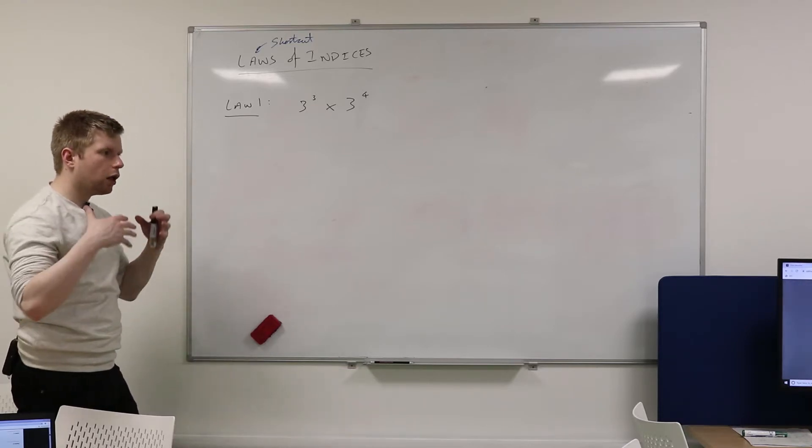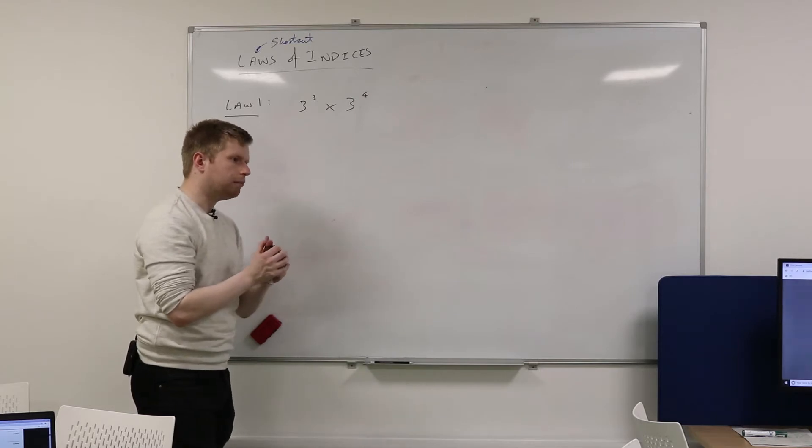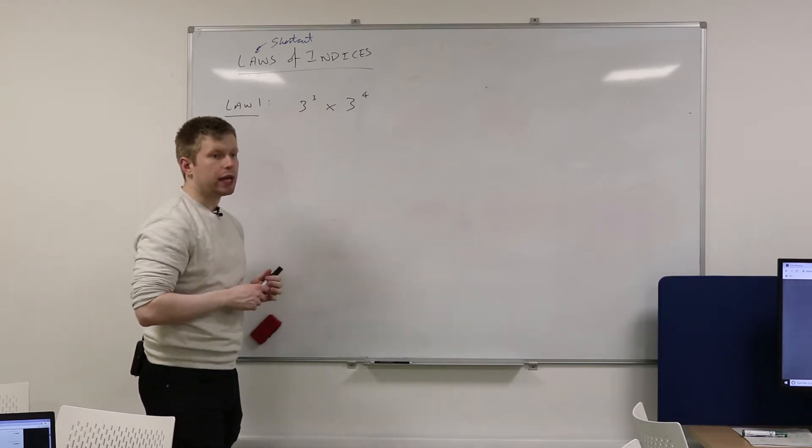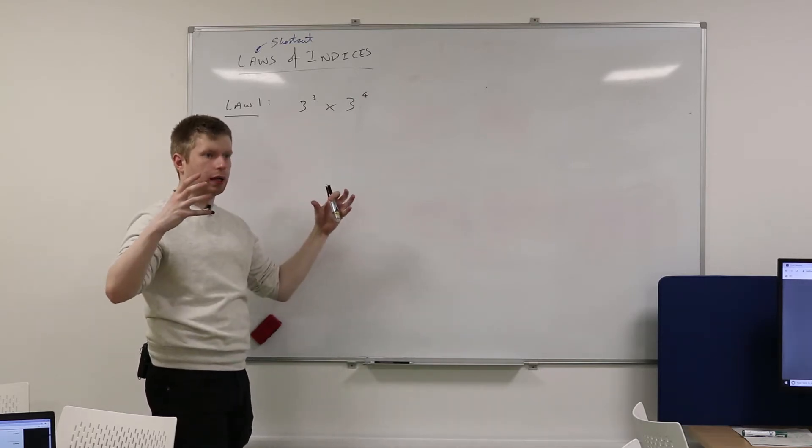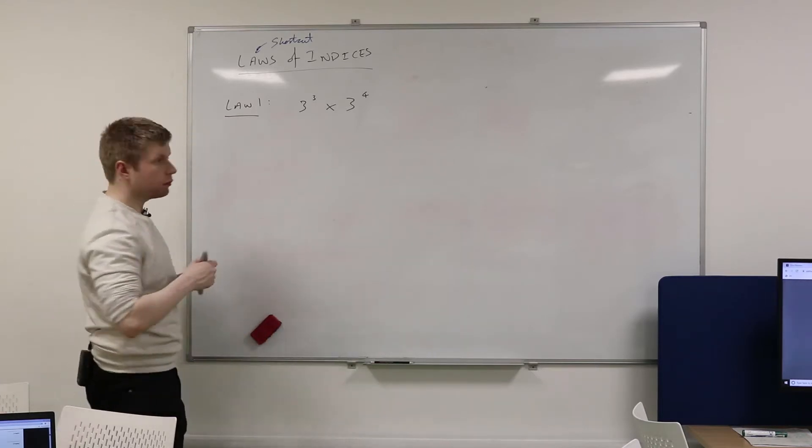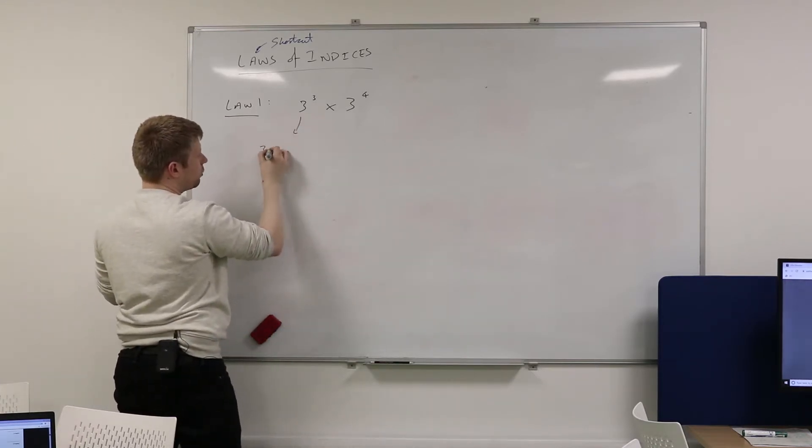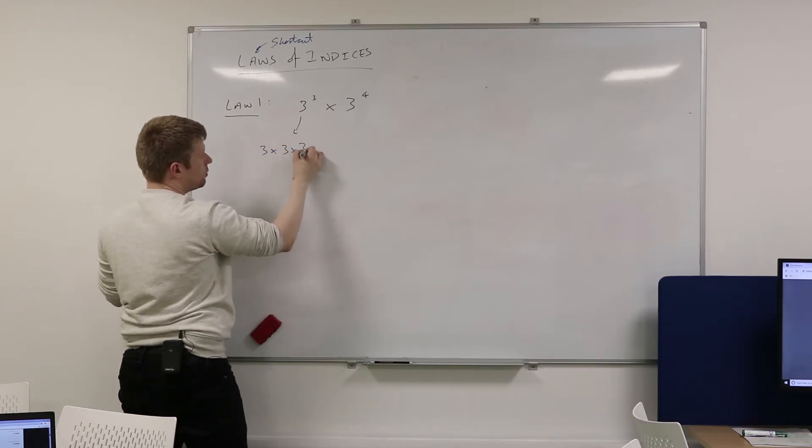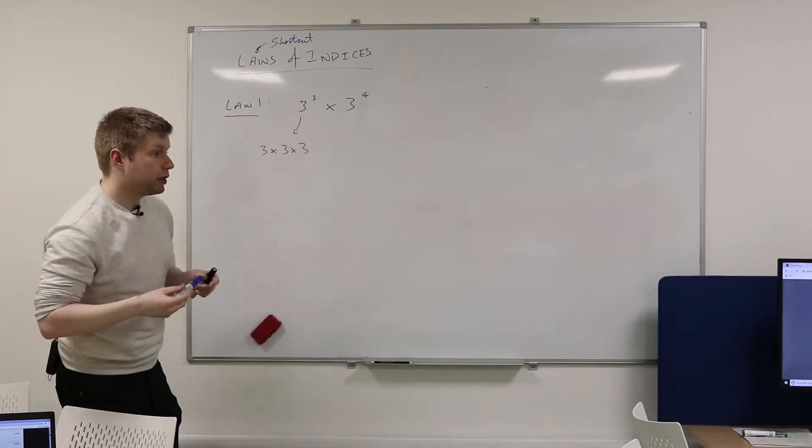Don't tell me what this is equal to. Tell me how I would work through this logically. So what does 3 cubed actually mean, if I was going to write it out in longhand? Exactly. So that there would be 3×3×3. 3 multiplied by itself, 3 times.